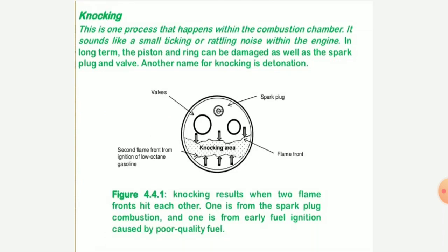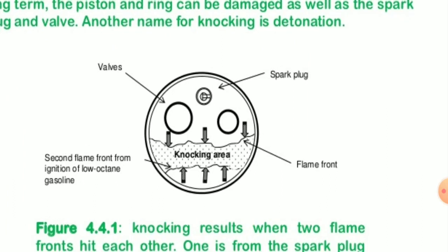What is the actual knocking phenomenon? It is a process that happens within the combustion chamber — it is the source of a small ticking or rattling noise within the engine over the long term. The piston and rings can be damaged, as well as the spark plug and valves. Another name for knocking is detonation. When the spark plug ignites the spark and the valve operates, the unburned fuel mixes with other unburned fuel — the flame front of low-octane gasoline ignition in the dotted region causes the knocking effect.